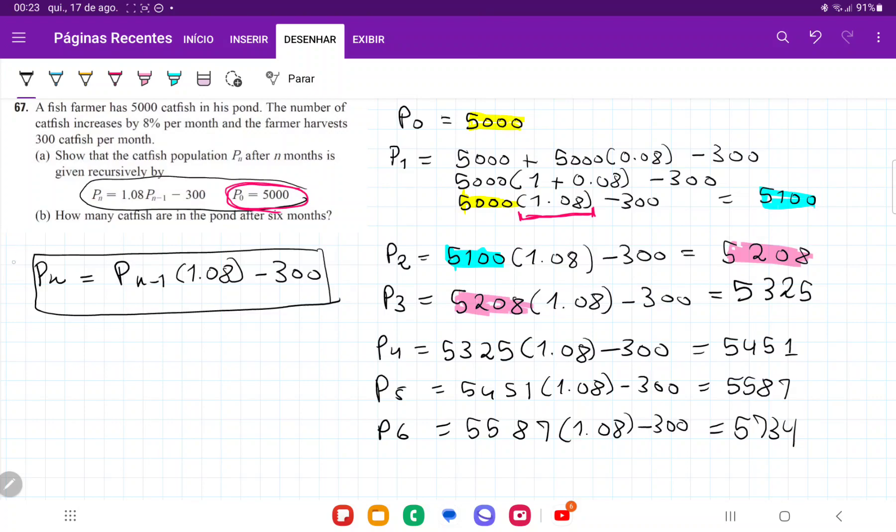So we can say here, so that was item A. And item B, we say that P6 is going to be 5,734. And that is it for number 67. Thank you.